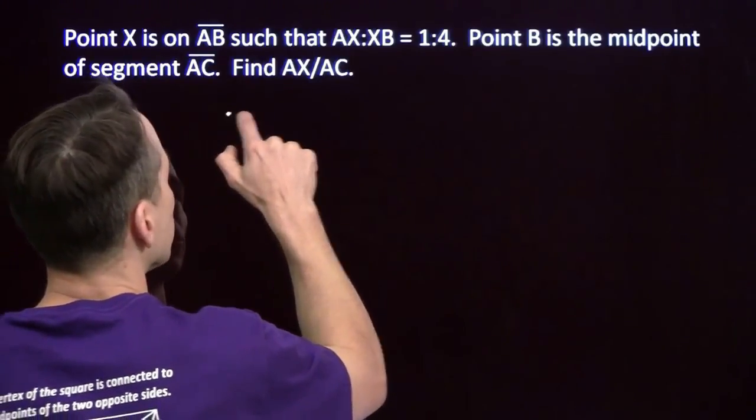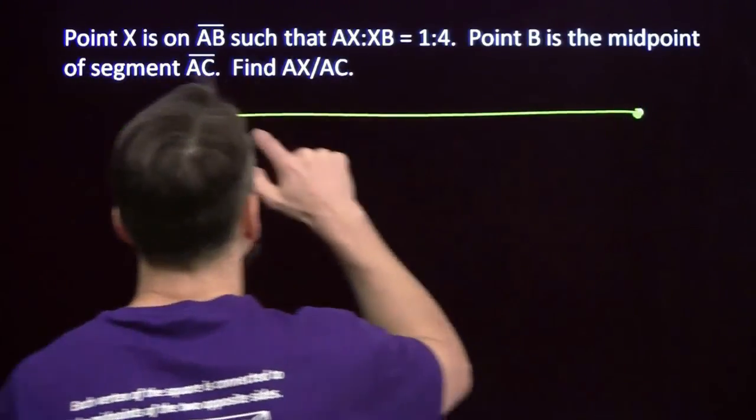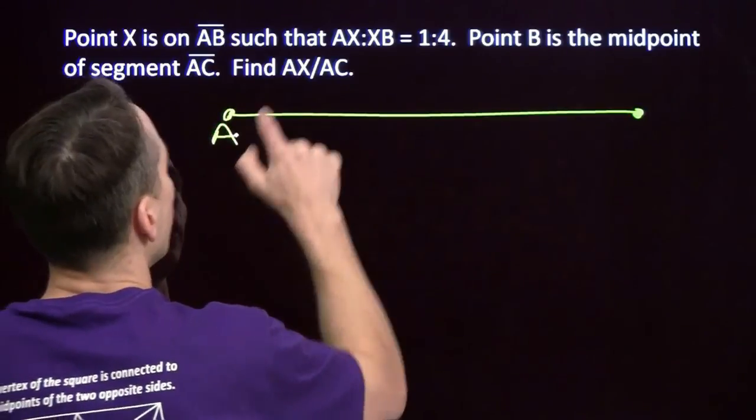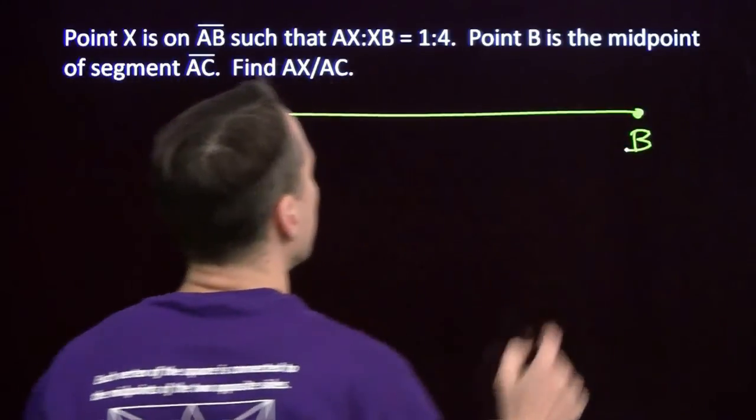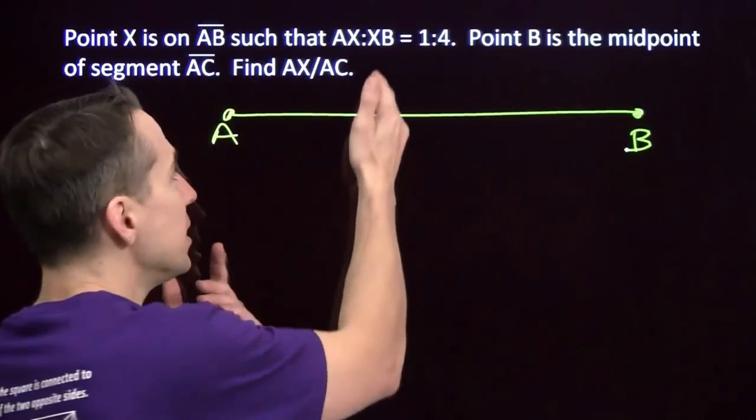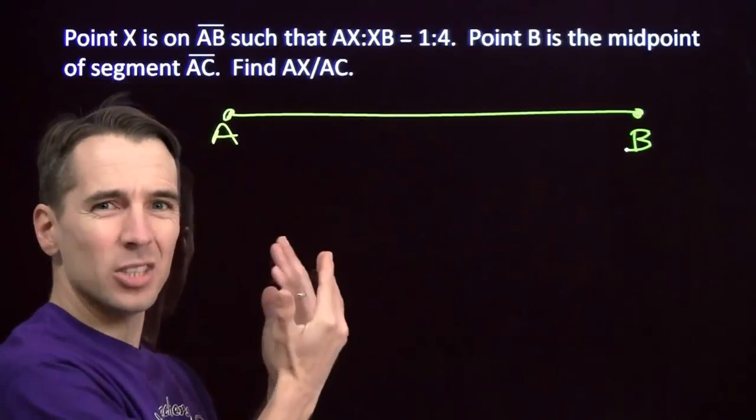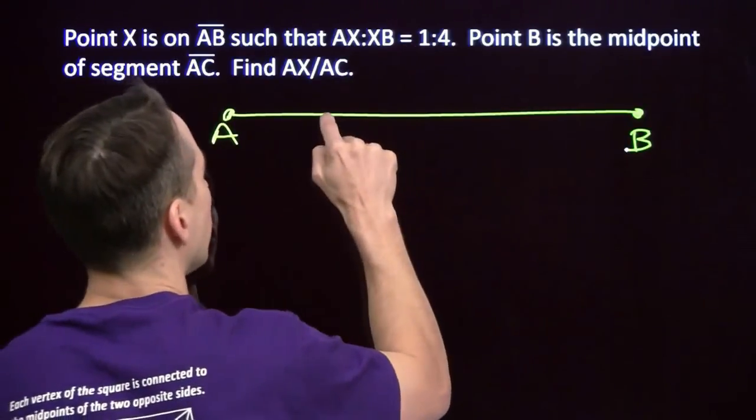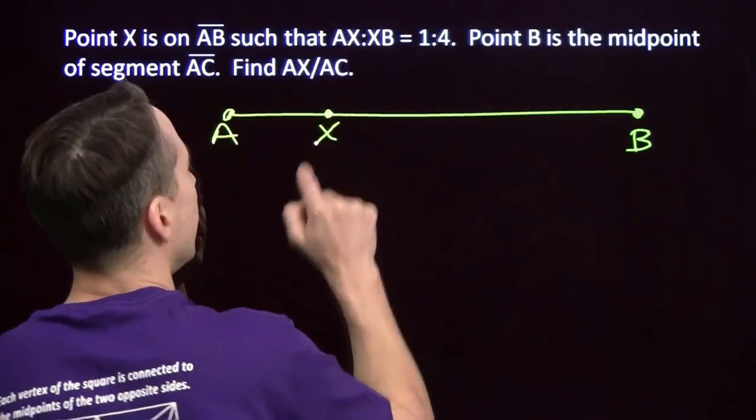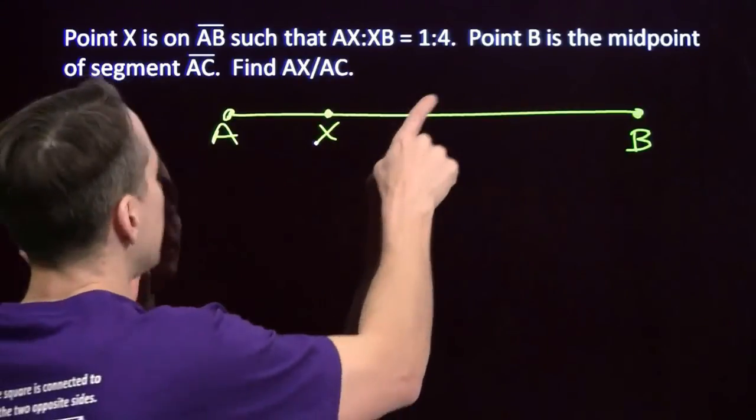Point X is on AB, so we'll start off. We'll draw AB. There's AB. Point X is on here such that the ratio of AX to XB is 1 to 4. That means AX is a lot smaller than XB, so X is closer to A than to B.